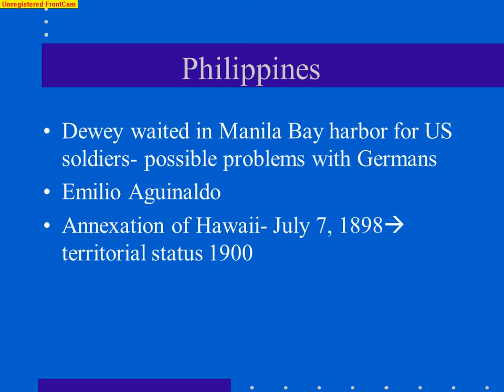Hawaii came up again during the war. It was one thing to deny annexation before, but now we were fighting Spain in Cuba, soon Puerto Rico, and the Philippines in Asia — we needed a refueling station in the Pacific on the way to the Philippines. There was no more discussion about anti-imperialism, and through a joint resolution of Congress, Hawaii was officially annexed on July 7th of 1898 and later granted territorial status in 1900. Here is Emilio Aguinaldo with his Filipino forces.